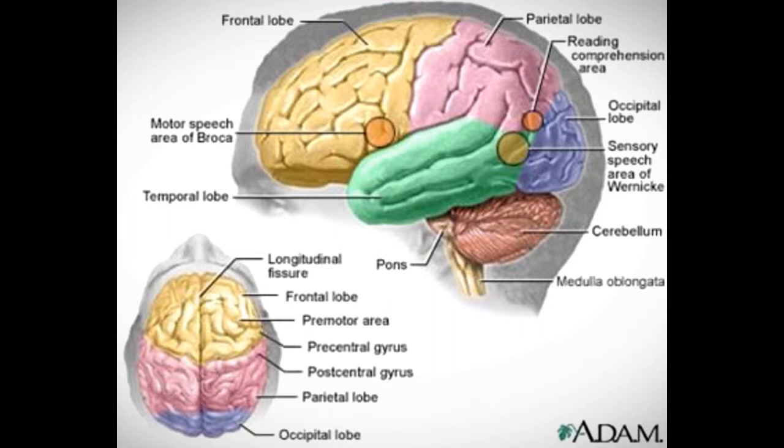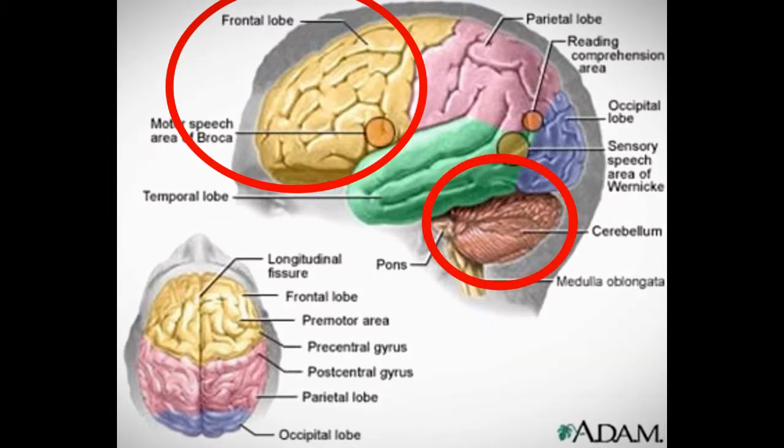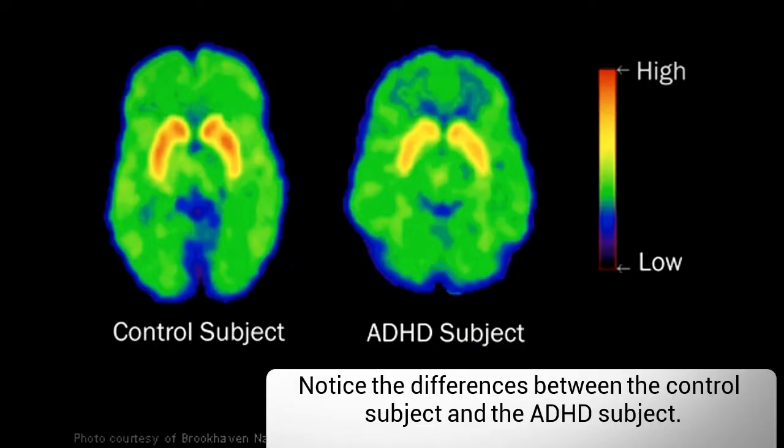This suggests that inattention, hyperactivity, and impulsivity may reflect frontal lobe dysfunction, with additional brain regions, such as the cerebellum, also being involved. Other brain systems related to attention have also been found to differ between people with and without ADHD.